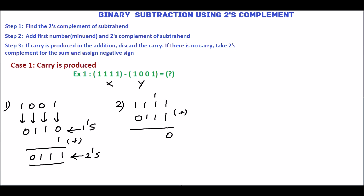1 plus 1 plus 1 gives sum 1 with carry 1. Then 1 plus 1 gives sum 0 with carry 1. Write the carry. In step 2 we are getting a carry. In 1's complement subtraction we would add this carry with the LSB of the sum, but in 2's complement subtraction we have to discard this carry.